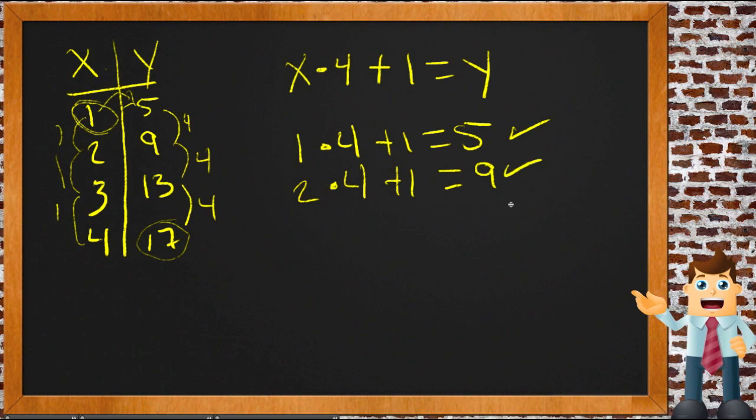3 times 4 is 12, plus 1 is 13. Yep. And 4 times 4 is 16, plus 1 is 17. Yep. So this rule, then—multiply it by 4 and add 1—is how we get from one number to another.